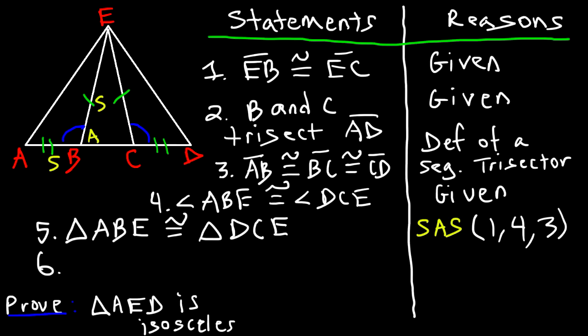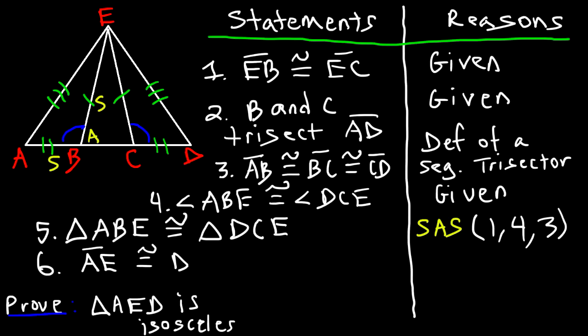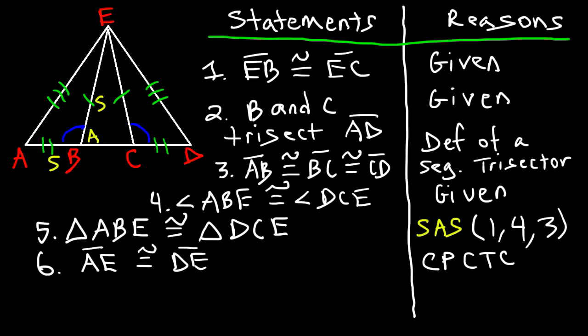Now that triangles ABE and DCE are congruent, if two triangles are congruent then all their corresponding parts are congruent. So we can say segment AE is congruent to segment ED. The reason: CPCTC — corresponding parts of congruent triangles are congruent.